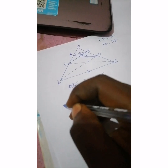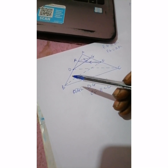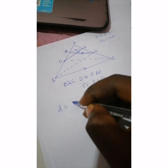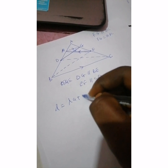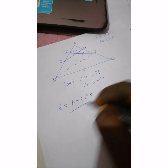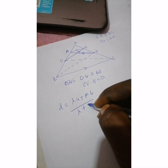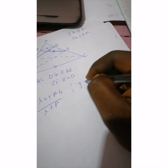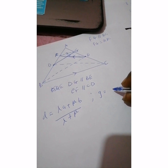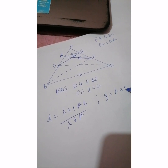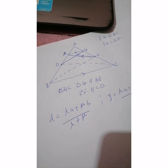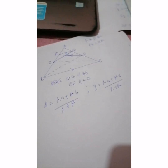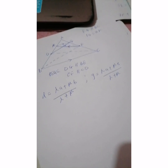So we're going to use ratio notation. If D divides AB in ratio λ to μ, then D equals (λA + μB) / (λ + μ). Since DJ divides the two sides equally, J will divide AE in the same proportion, so J equals (λA + μE) / (λ + μ). Take note of that.